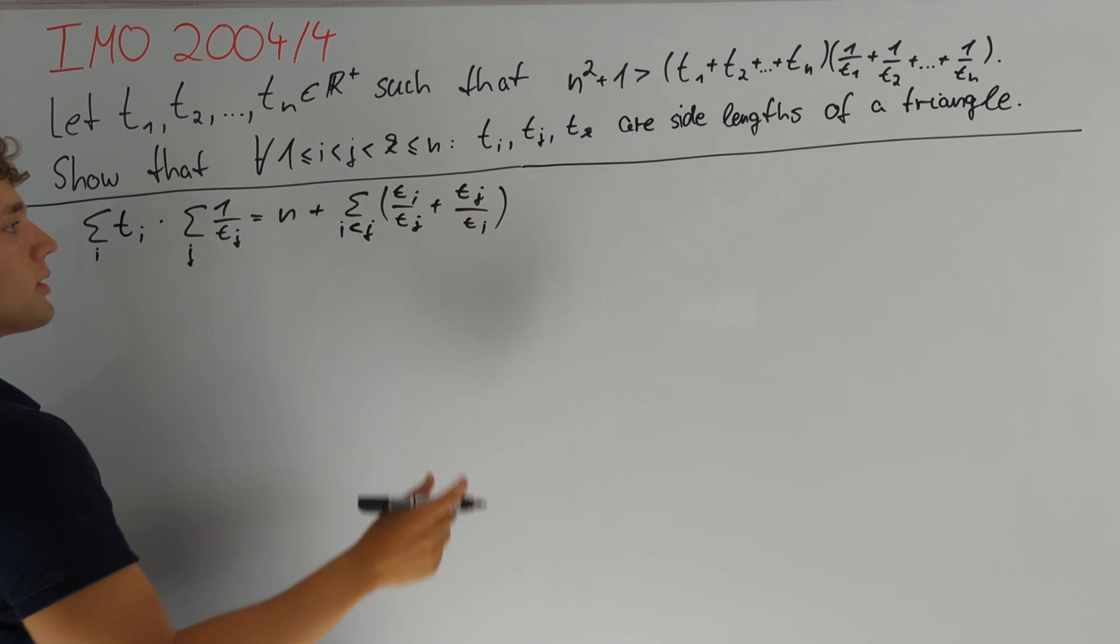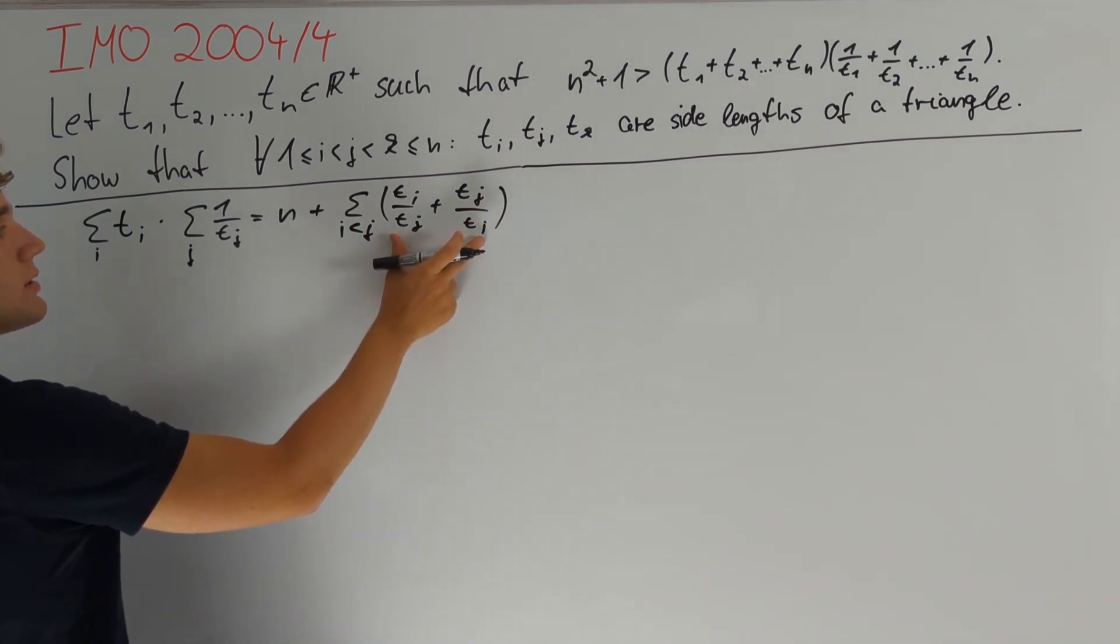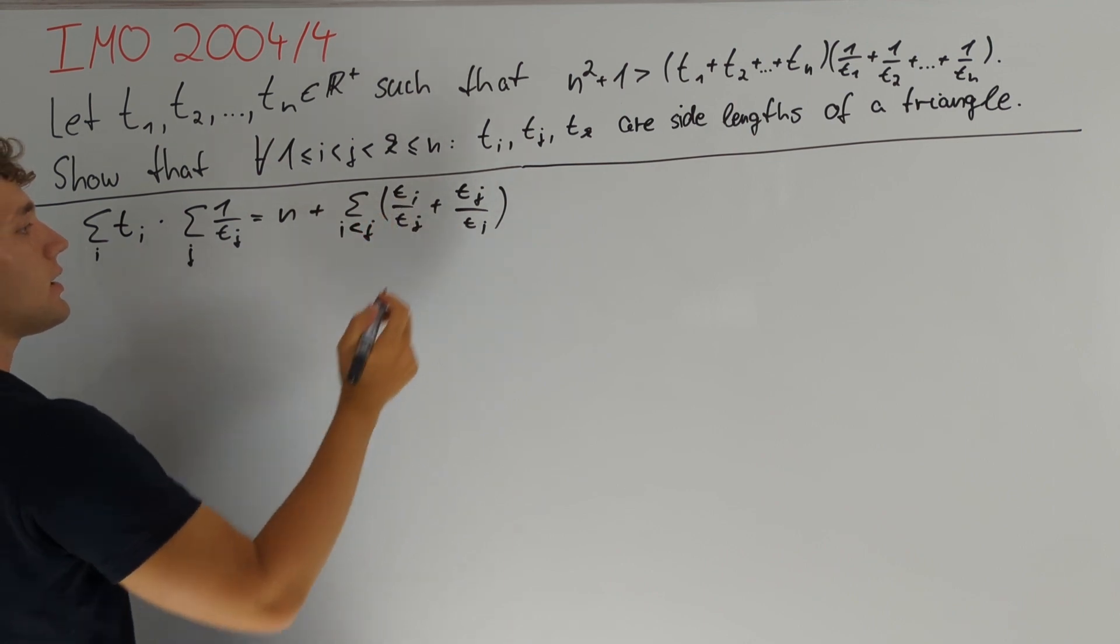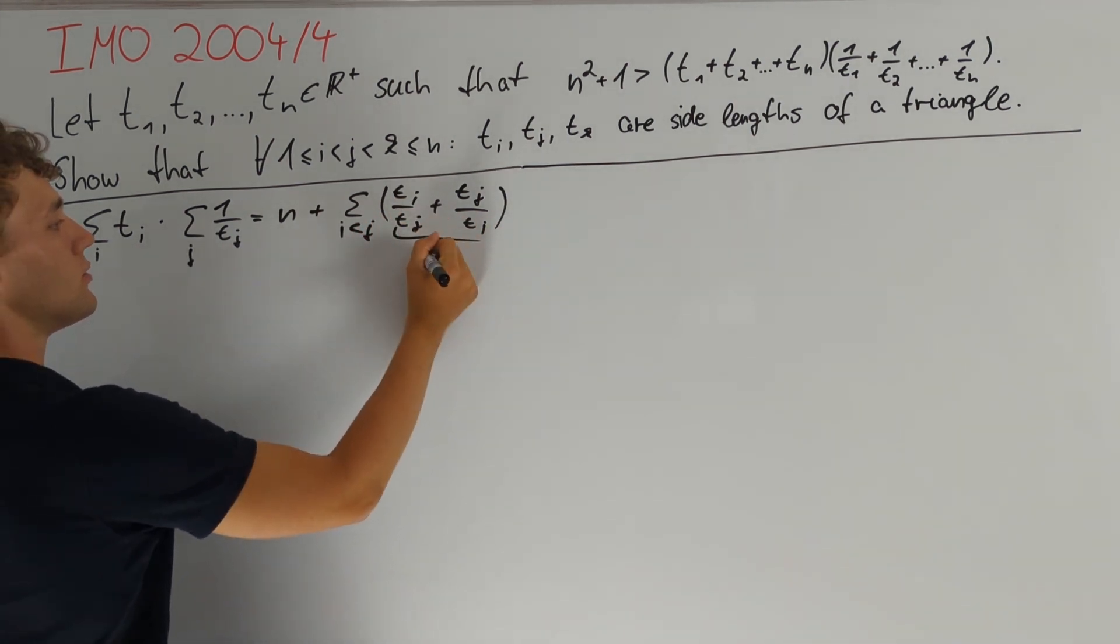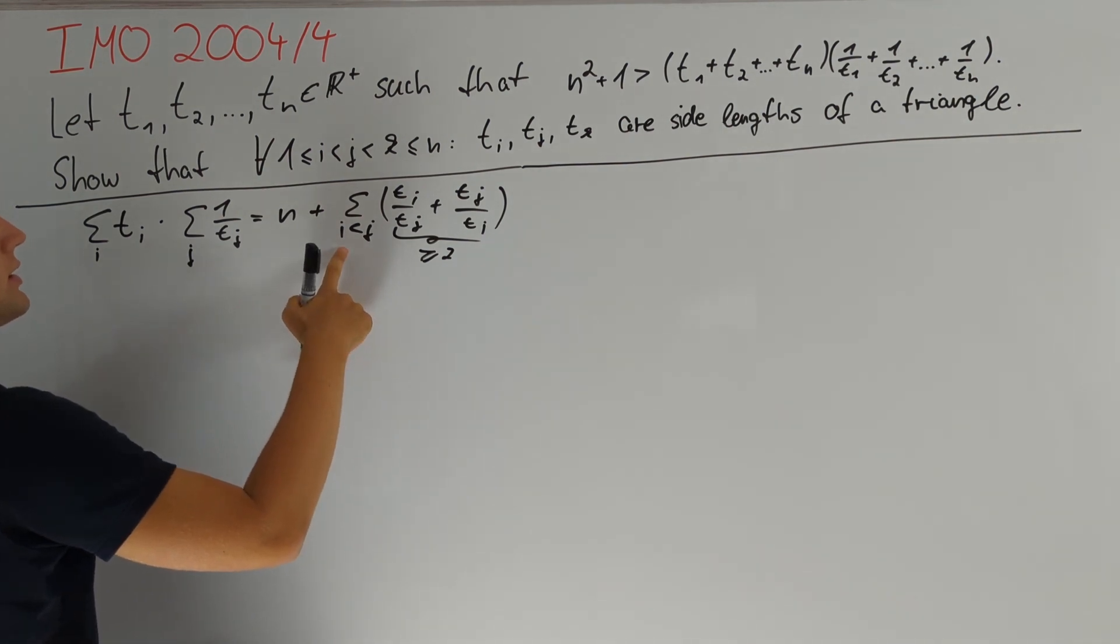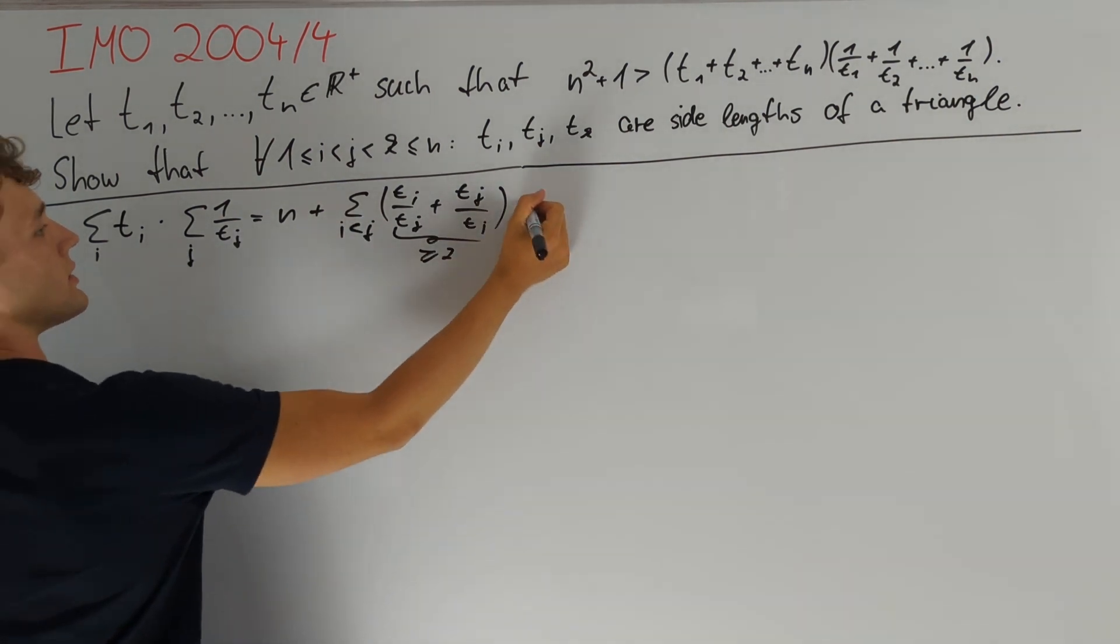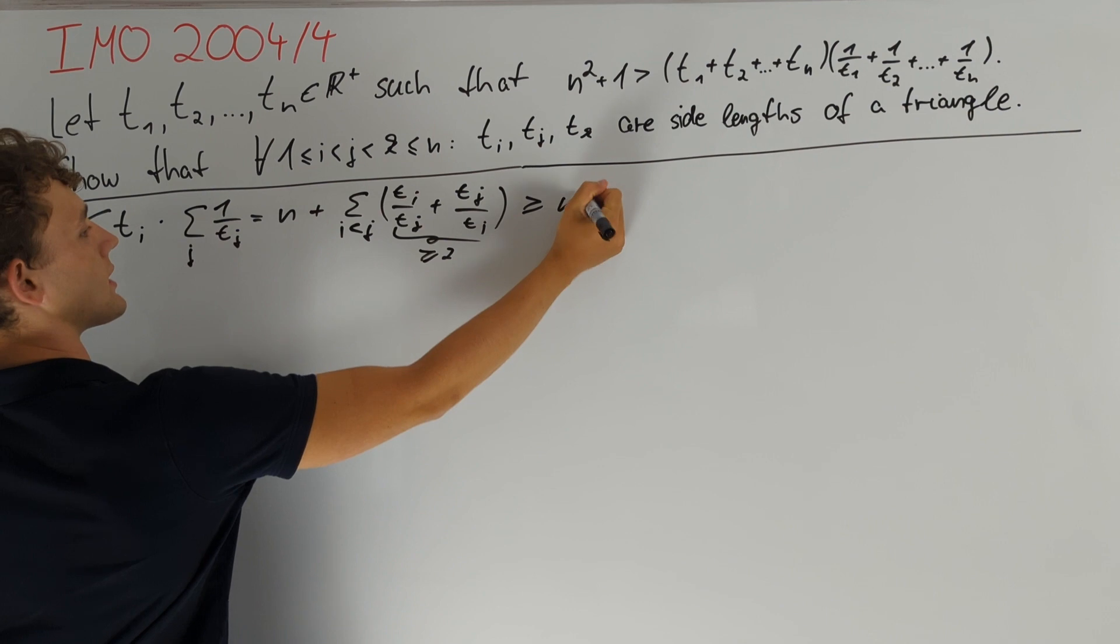By the AM-GM inequality, this is greater than or equal to 2 times the square root of tᵢtⱼ/tⱼtᵢ, which equals 2. Since we have n choose 2 terms here, we can bound this entire term from below by exactly n².